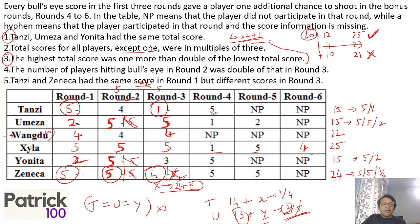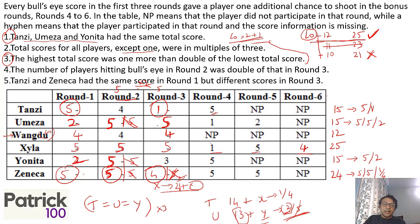With that, we have filled the table. It was a little tricky, but we looked at each condition one by one. The key was the multiple of 3 constraint — from that we got Tanzi, Umeza, and Yonita's total scores of 15, 15, 15. Then the key about the highest score being double the lowest plus 1 gave us the only valid combination of 12 and 25. From that we got Wangdu's and Zyla's scores. Then the bullseye double condition was also a very important key.